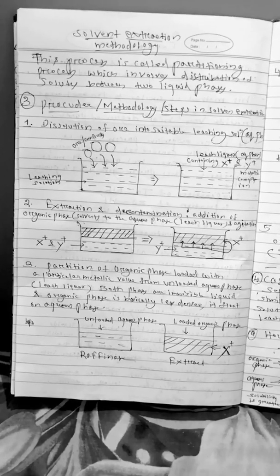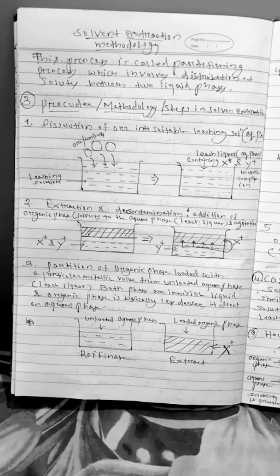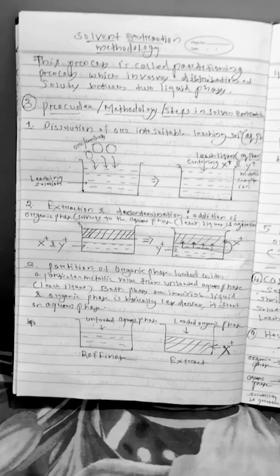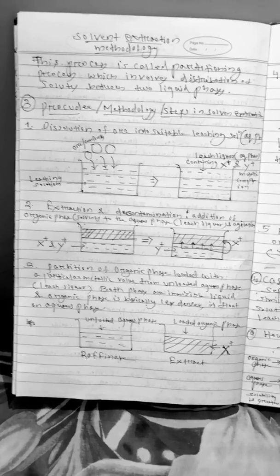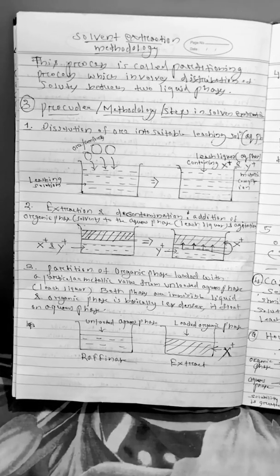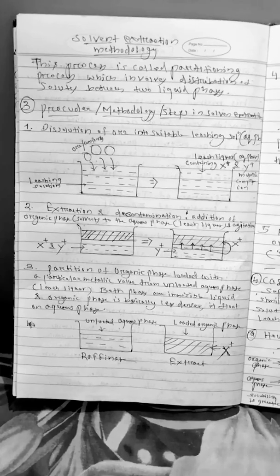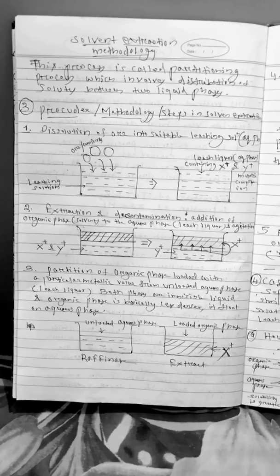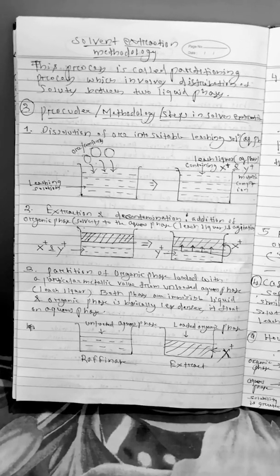Now the third stage is the partitioning stage. So we know that this organic phase is lighter or less dense as compared to that of the aqueous phase, so it always floats. So the partitioning means we just have to separate the loaded organic phase from the loaded aqueous phase.